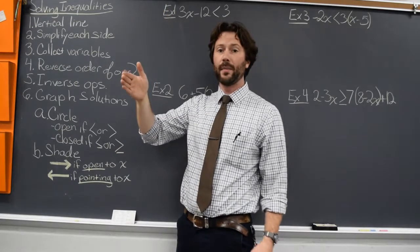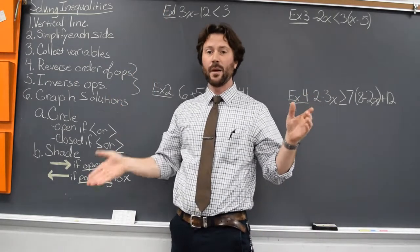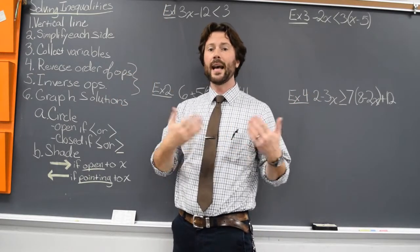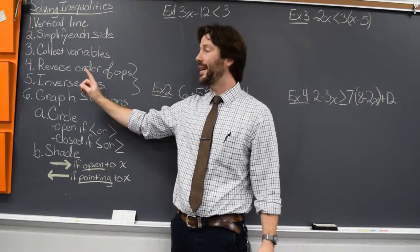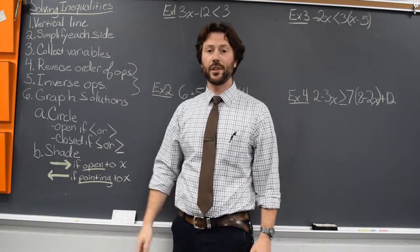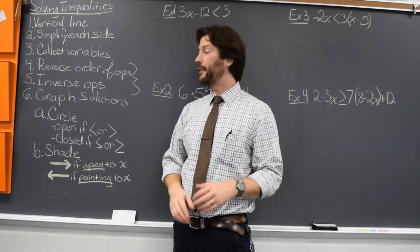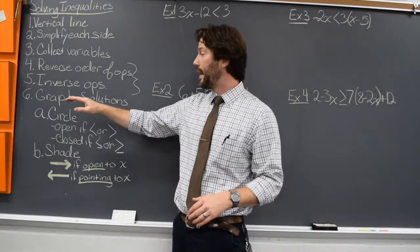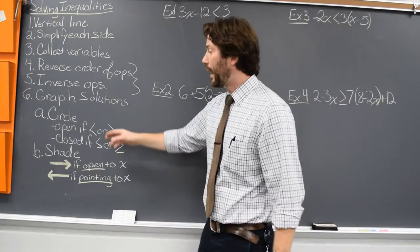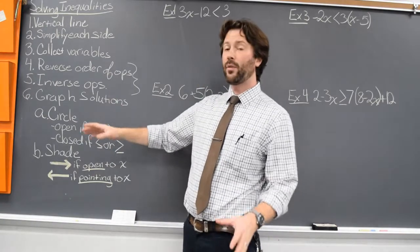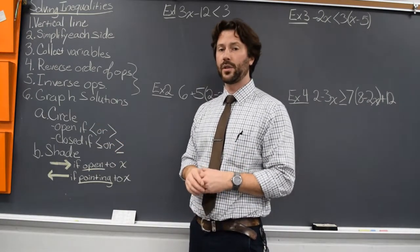Draw the vertical line down the middle, simplify each side, move all your variables to one side, and then work backwards using reverse order of operations and inverse operations to get that variable by itself. The only real difference is that we graph our solutions instead of checking them. And the way we're going to graph, we're trying to shade on a number line where our answers are.